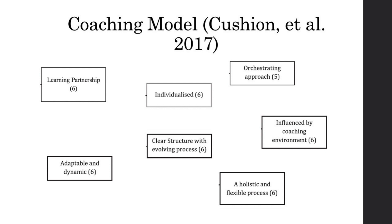Principle 1 is learning partnership, which is an interaction shaped by the coaching process as a learning process for both the coach and the athlete. Principle 2 is individualization, in which a coach must have an individual performer at the heart of the process and focus on individual performance. The third principle is orchestrating approach — a type of control that needed to be flexible so as to achieve a desired outcome. Principle 5 is a clear structure with an evolving process, which allows the process to adapt based on reflection, learning evolving, and being led by developed needs.